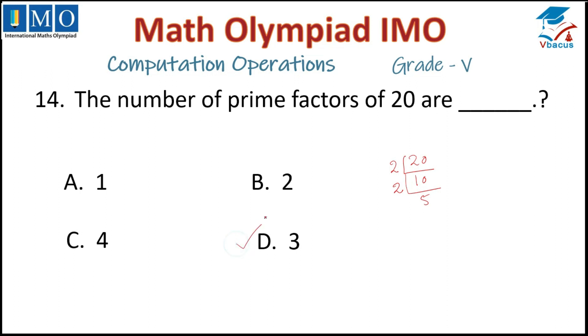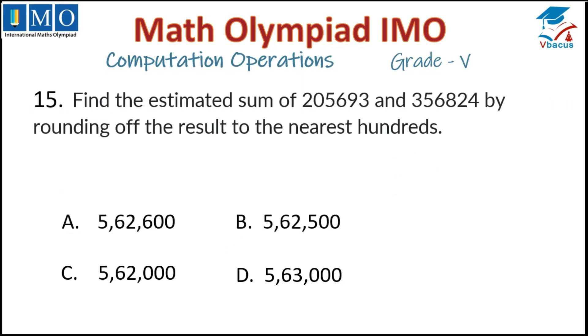Question number 15: Find the estimated sum of 205,693 and 356,824 by rounding off the result to the nearest hundred. First we have to add that.